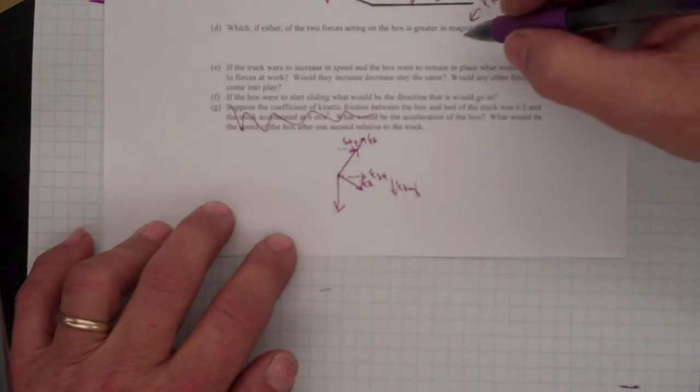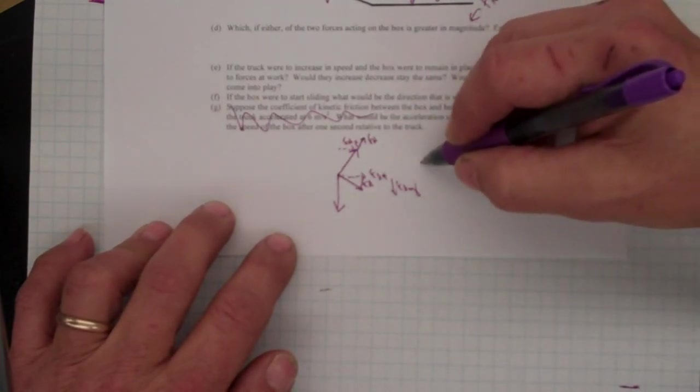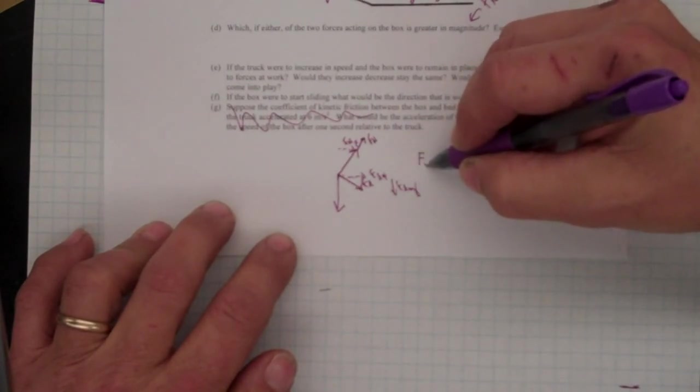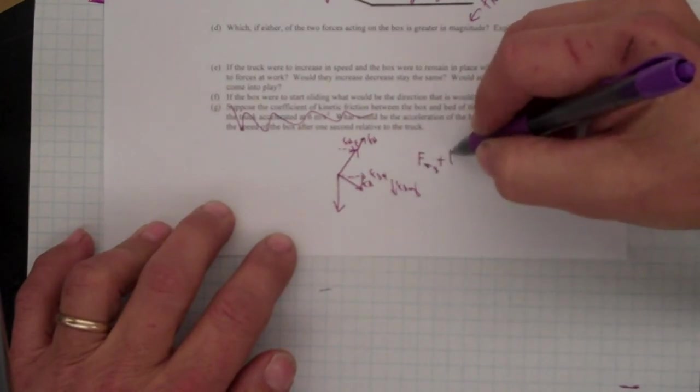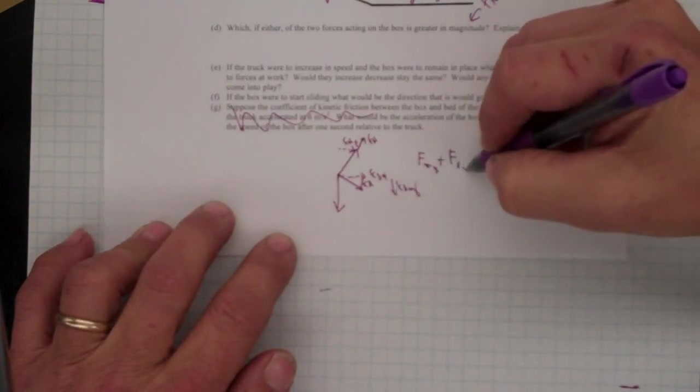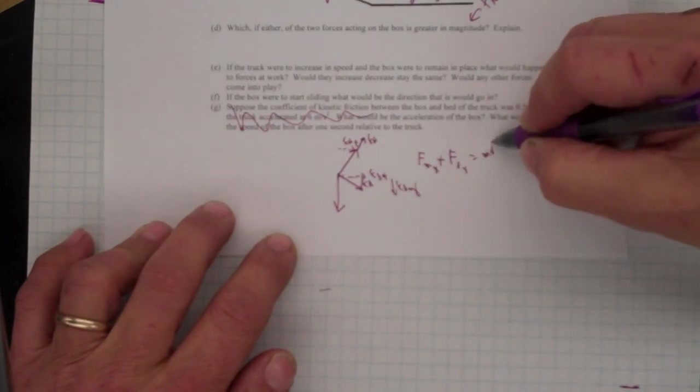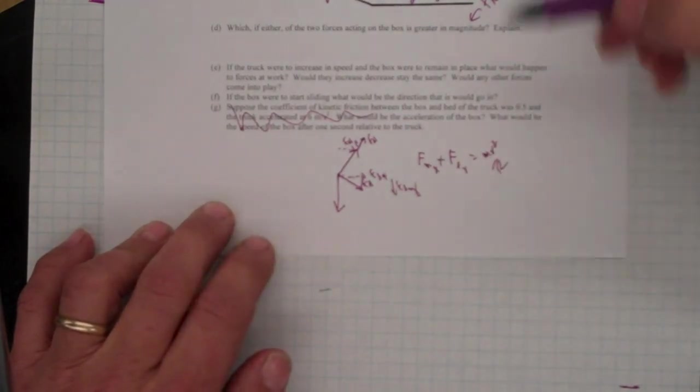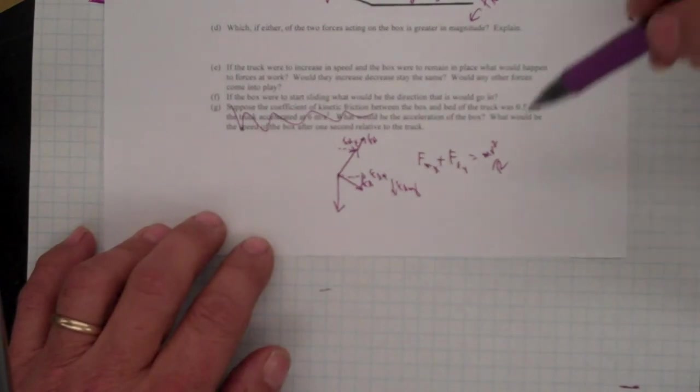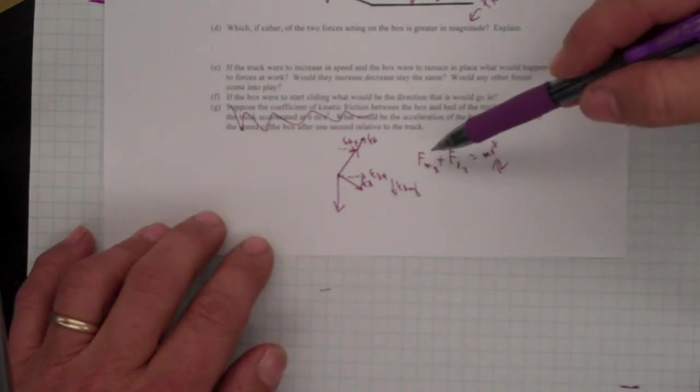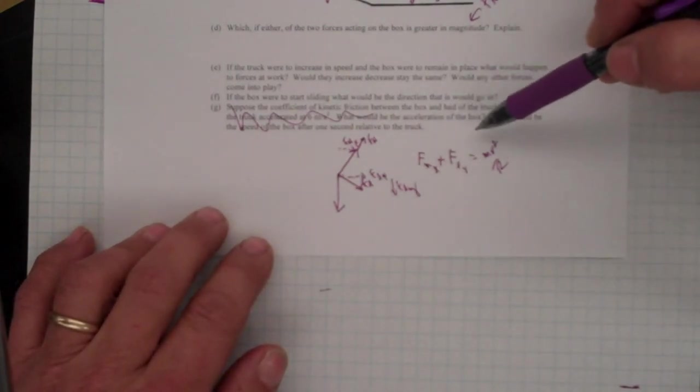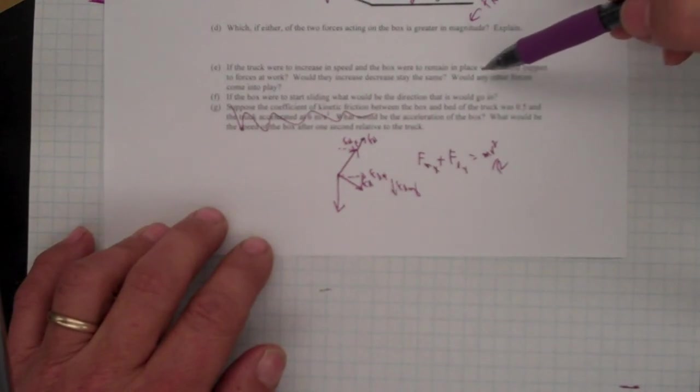Force normal increases and force of friction are both there. They both have components in the x direction. So now, Fnormal in the x direction plus force of friction in the x direction will equal my Mv squared over R. And there's a bunch of work involved in calculating what the normal force is. And that's beyond what we're going to want to talk about here.